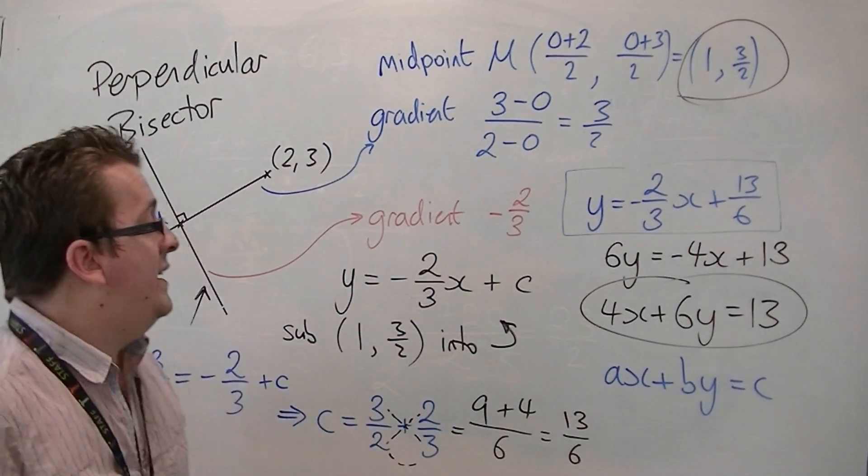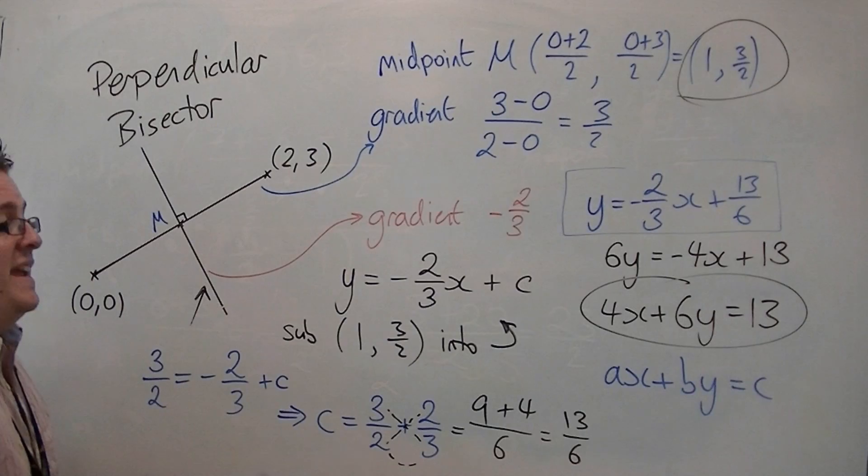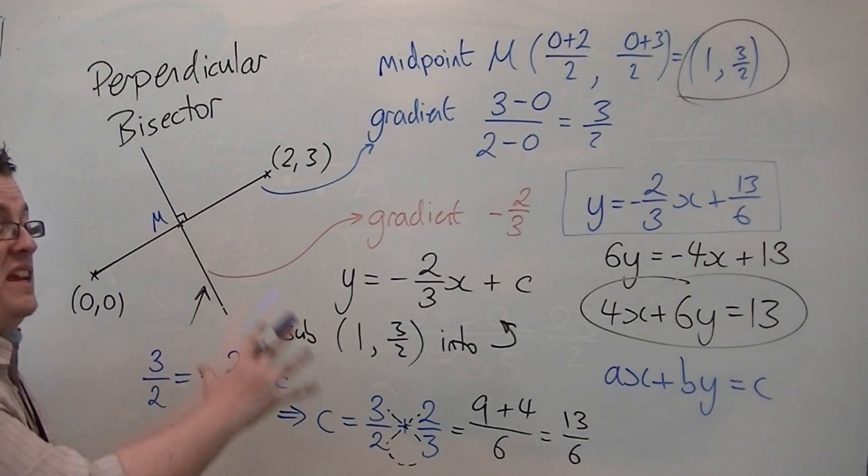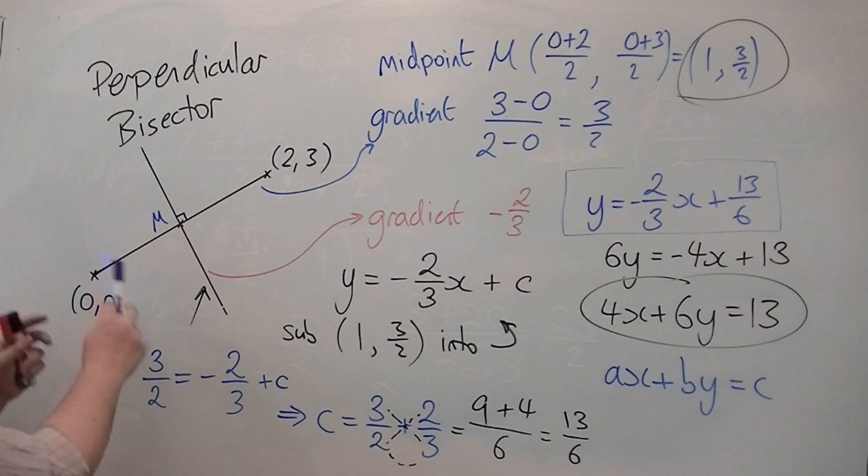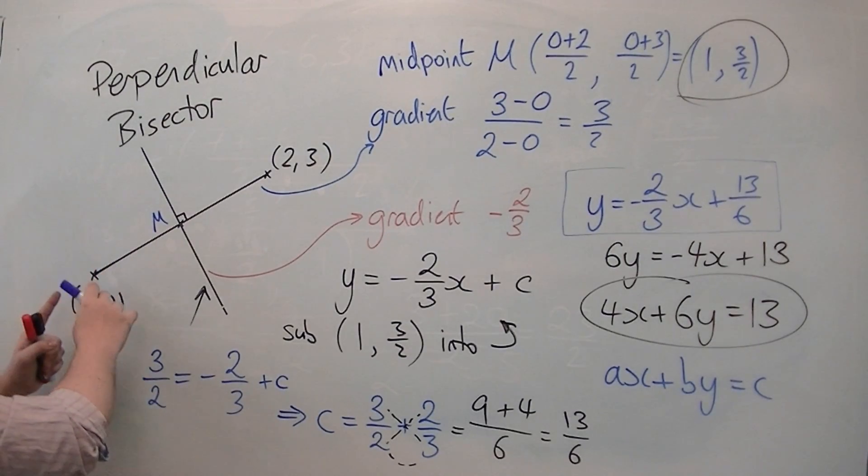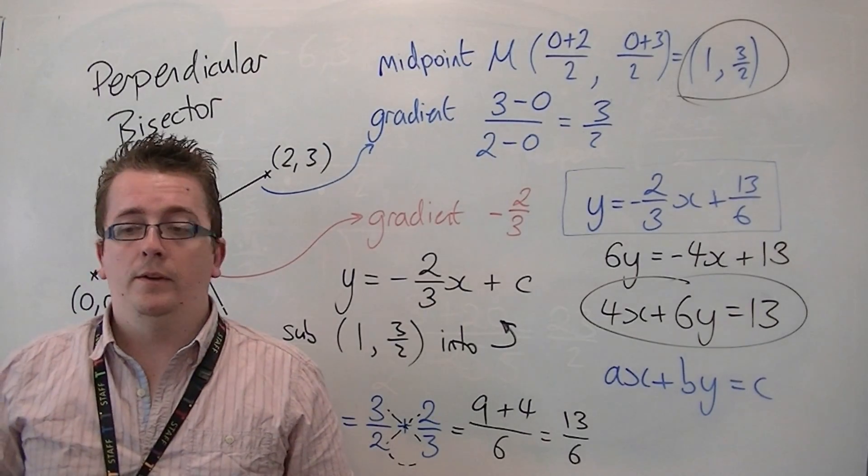And that is how you can find the perpendicular bisector of the line between 0, 0 and 2, 3.